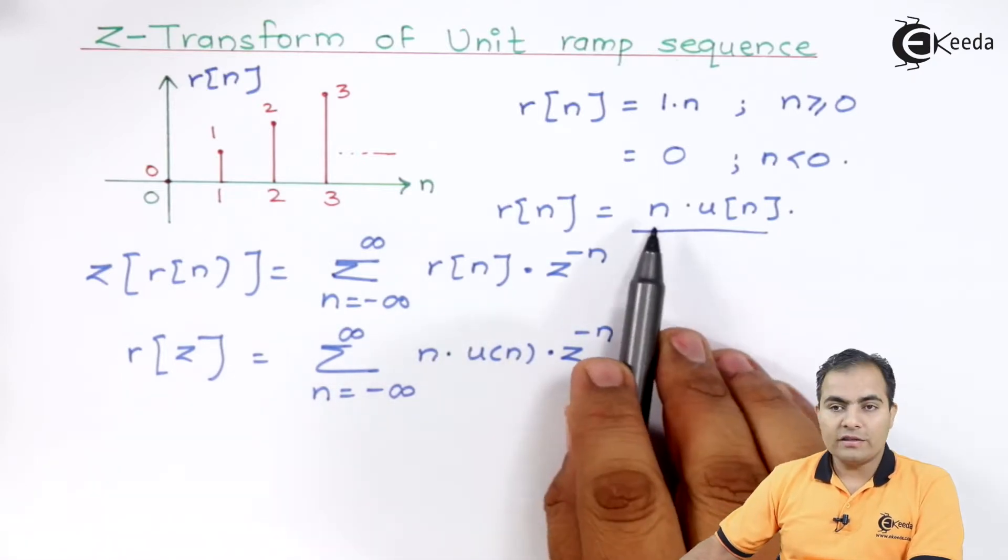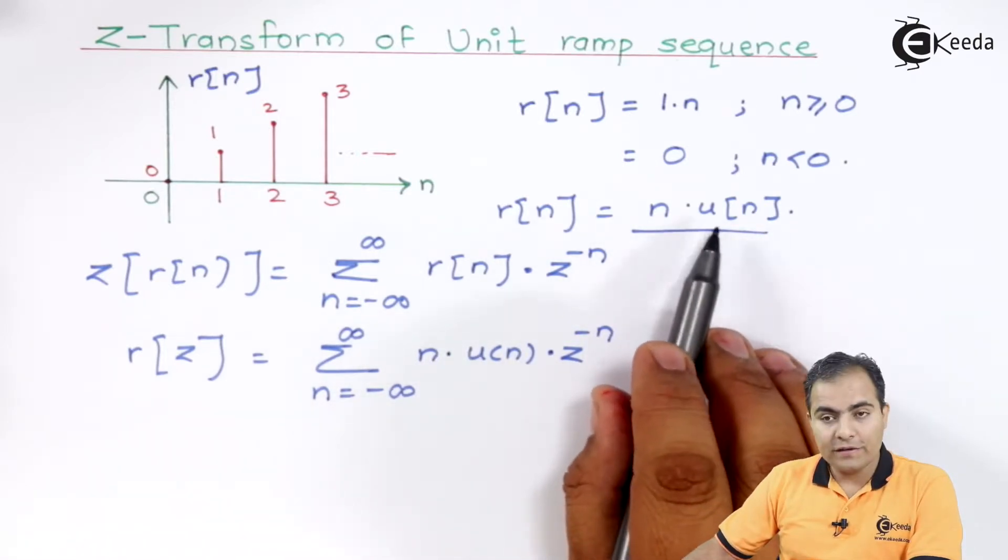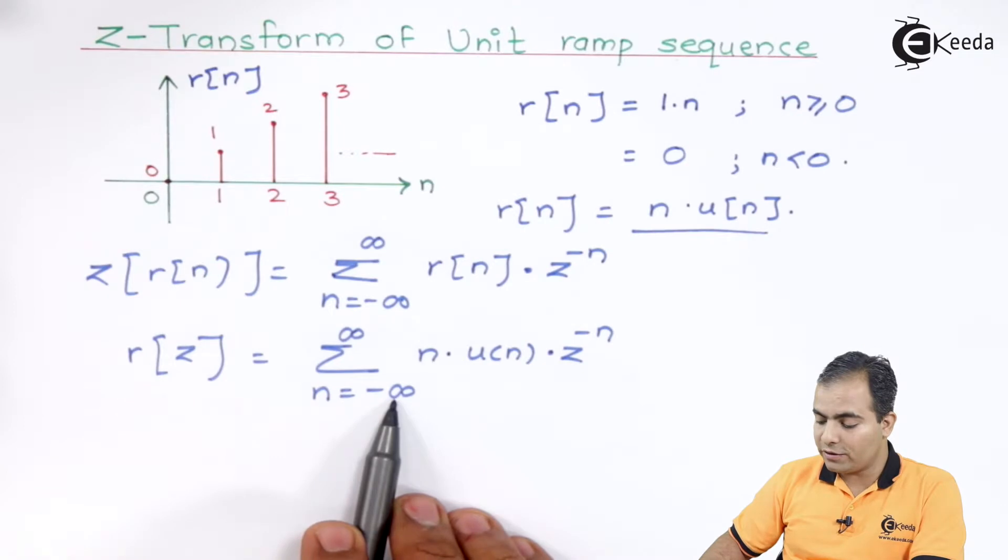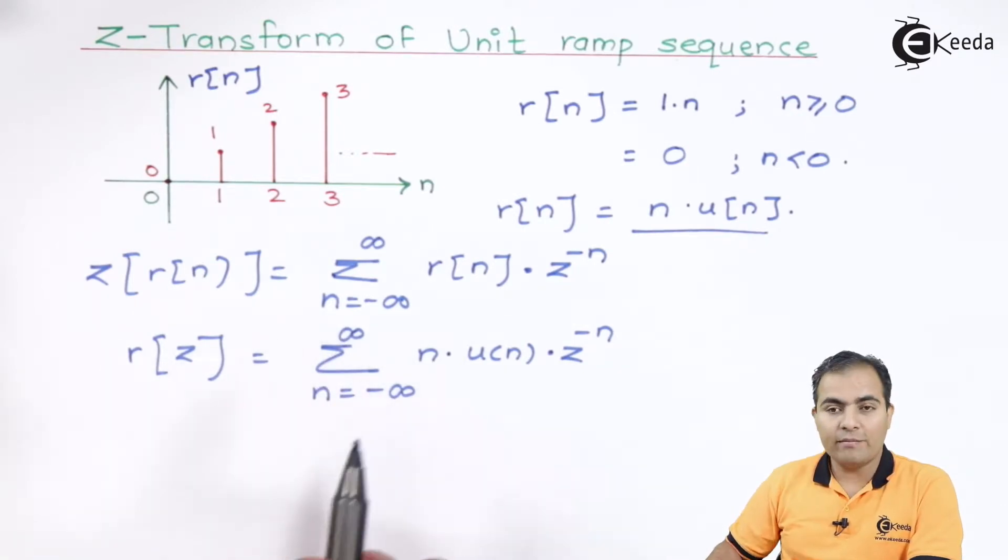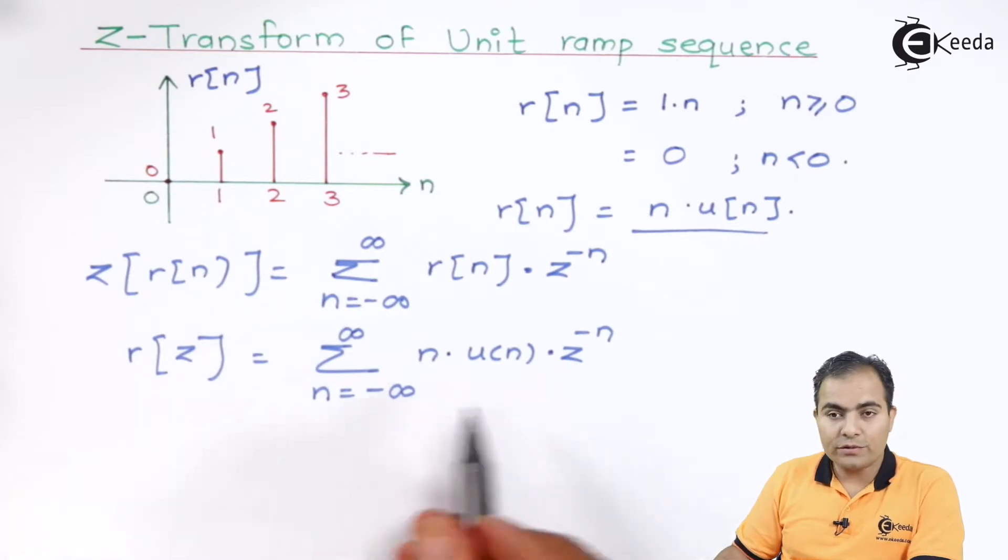So, what is our R of n? R of n is n into u of n and we know that u of n is available only from 0 to infinity when the summation limit is 0 to infinity and having amplitude 1. So I will substitute that value.